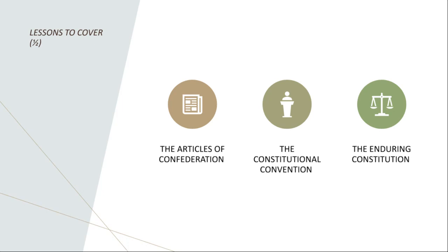Today, the Constitution remains a symbol of American democracy and a foundation of the nation's legal system. It has guided the United States through times of crisis and change, from the Civil War to the Civil Rights Movement. In conclusion: the Articles of Confederation demonstrated the need for a stronger central government, which led to the Constitutional Convention and the creation of the U.S. Constitution — a document that has provided the framework for American government and society for over two centuries, with principles that continue to shape the nation's course today.